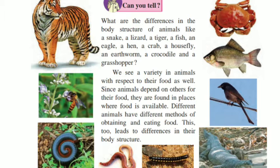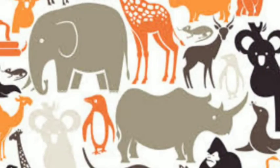Animals have body parts like a head, a neck, a torso, a tail, and limbs for movement. They have various organ systems which carry on various functions inside their body. In this respect too, there is a lot of diversity in animals. We also see a variety in animals with respect to their food. Since animals depend on others for their food, they are found in places where food is available. Different animals have different methods of obtaining and eating food, which also leads to differences in their body structure.